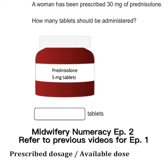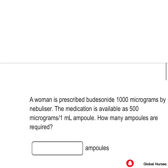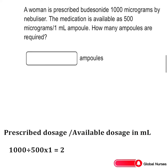Made with numeracy, episode two — refer to previous videos for episode one. Our next question says a woman is prescribed 1000 micrograms by nebulizer. The medication is available as 500 micrograms per one ml ampoule. How many ampoules are required? Our prescribed dosage is 1000 micrograms divided by the available dosage of 500, times one, so our answer is two.